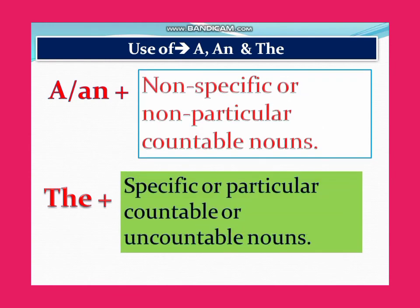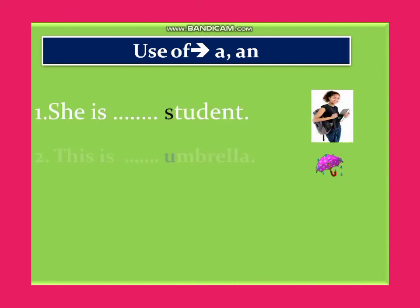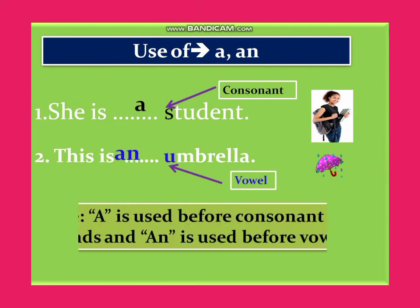'A' and 'an' are used before non-specific or non-particular countable nouns. 'The' is used before specific or particular countable and uncountable nouns. For example: 'She is a student' and 'This is an umbrella.' In the first sentence, 'a' is used before a consonant sound, and in the second sentence, 'an' is used before a vowel sound.